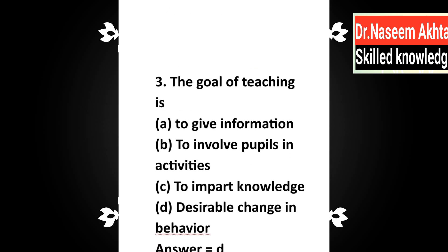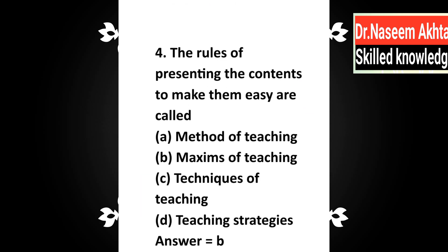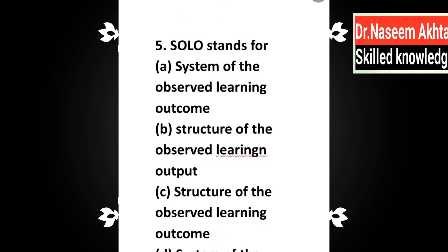Question 3: The goal of teaching is — a) to give information, b) to involve pupils in activities, c) to impart knowledge, d) desirable change in behavior. Correct answer is D: the goal of teaching is desirable change in behavior. Question 4: The rules of presenting contents to make them easy are called — a) method of teaching, b) maxims of teaching, c) techniques of teaching, d) teaching strategies. Correct answer is B: maxims of teaching. Question 5: SOLO stands for — a) System of the Observed Learning Outcomes, b) System of the Observed Learning Outcome, c) Structure of the Observed Learning Outcomes, d) System of the Observed Learning Outcome. Correct answer is C: Structure of the Observed Learning Outcomes.